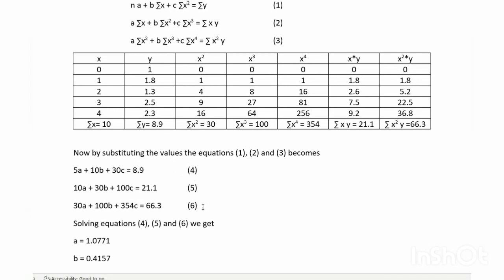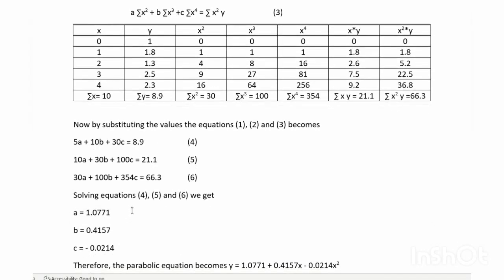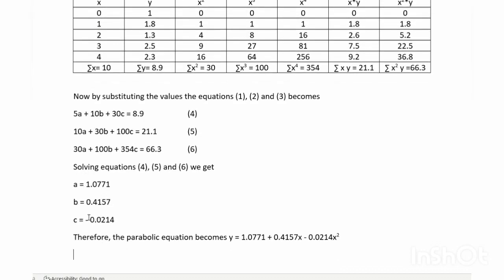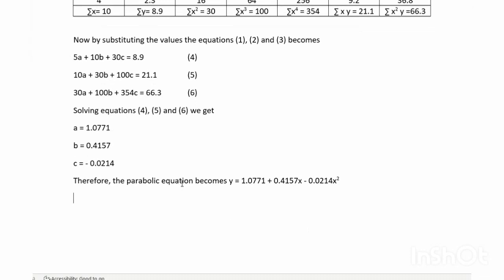Solving equations 4, 5, and 6 we get a equal to 1.0771, b equal to 0.4157, c equal to minus 0.0214. Therefore, the parabolic equation becomes y equal to 1.0771 plus 0.4157x minus 0.0214x squared.